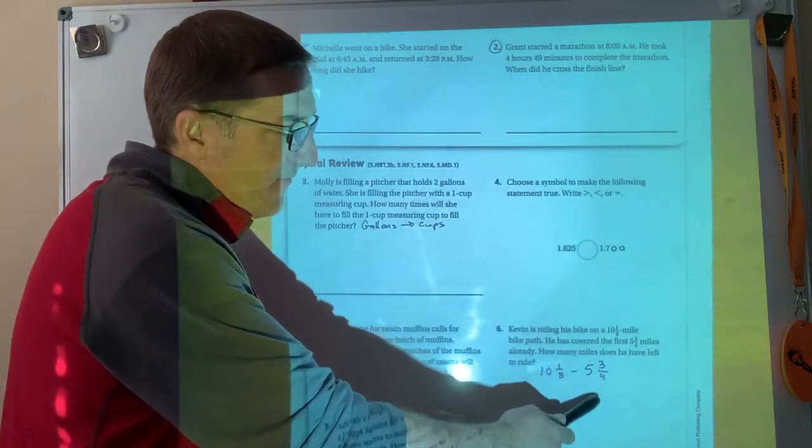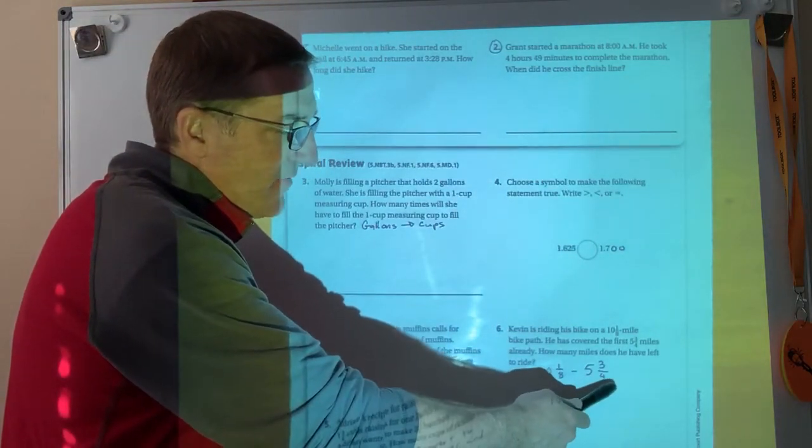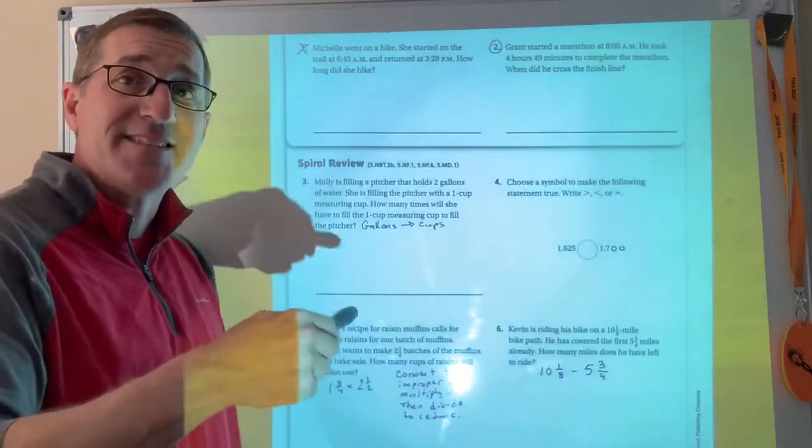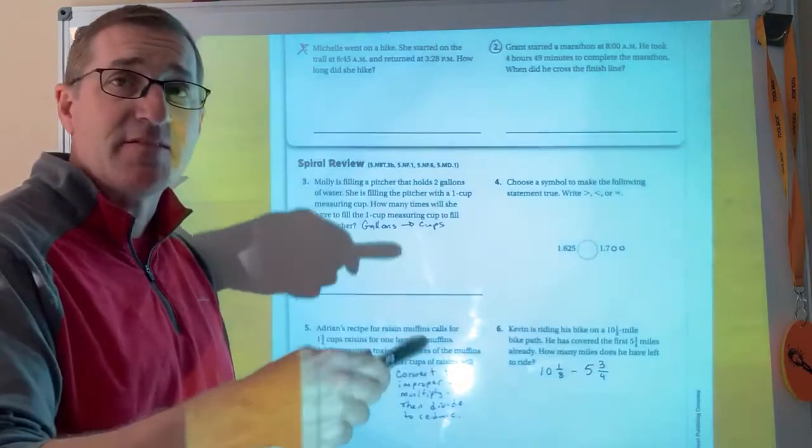This is 10 1⁄8. This is going to be 5 and 3⁄4. So you have to convert that to 8ths. So I have to multiply it by 2 over 2. So that's going to end up being 5 and 6⁄8. So 10 and 1⁄8 minus 5 and 6⁄8.